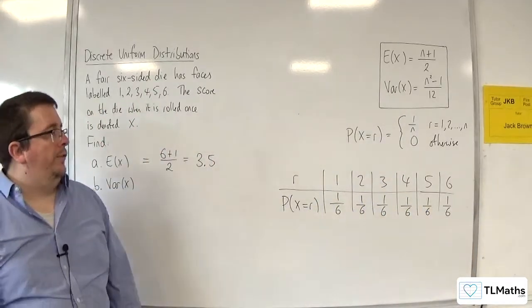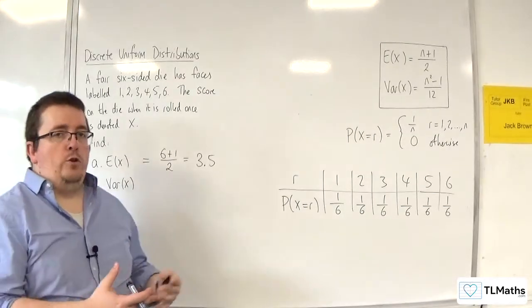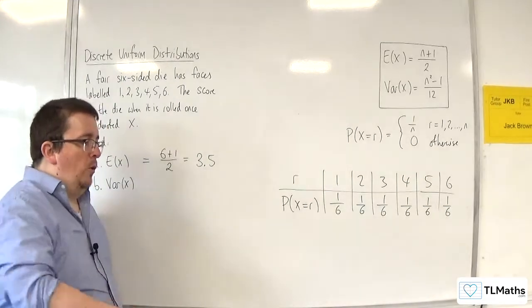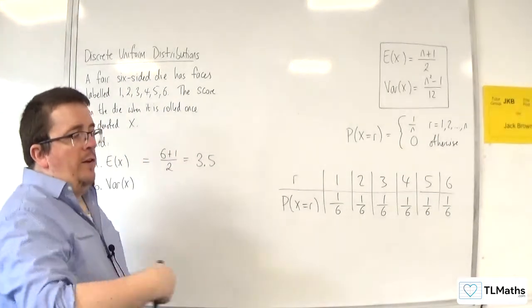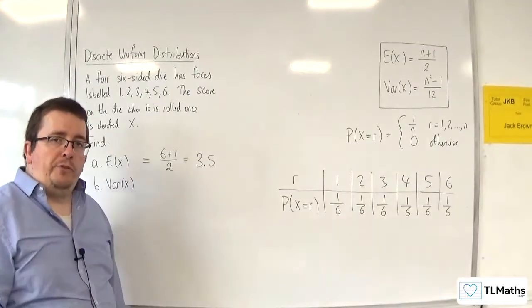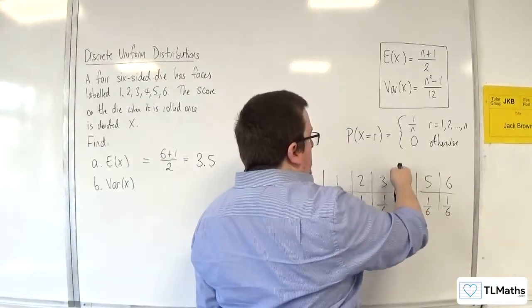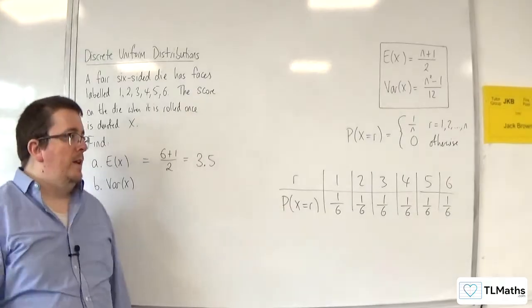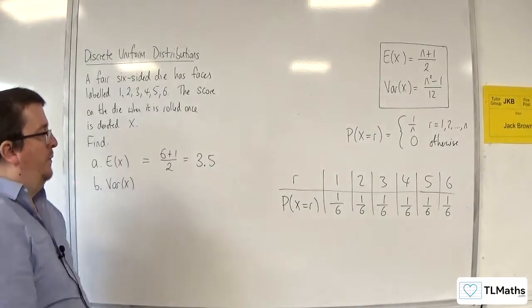What's the expected value? Now remember, the E of X is like your long-term average. You keep on rolling the die over and over again. What would you expect the average of all those scores to be? It's the average of 1, 2, 3, 4, 5, 6. It's halfway between 3 and 4, so it would be 3.5. So it's like you're adding up all the scores and dividing by how many times you've rolled the die.